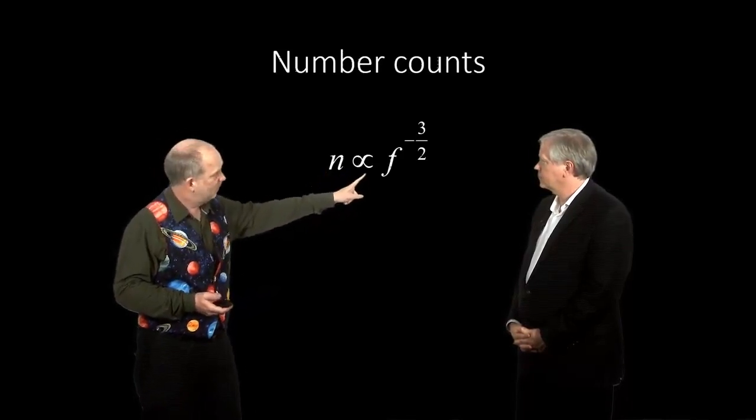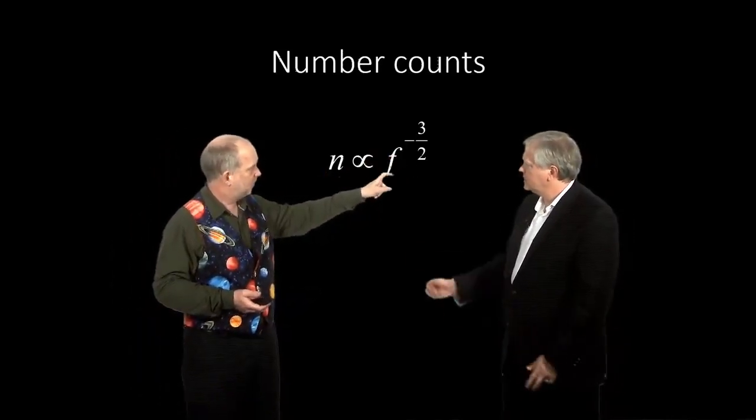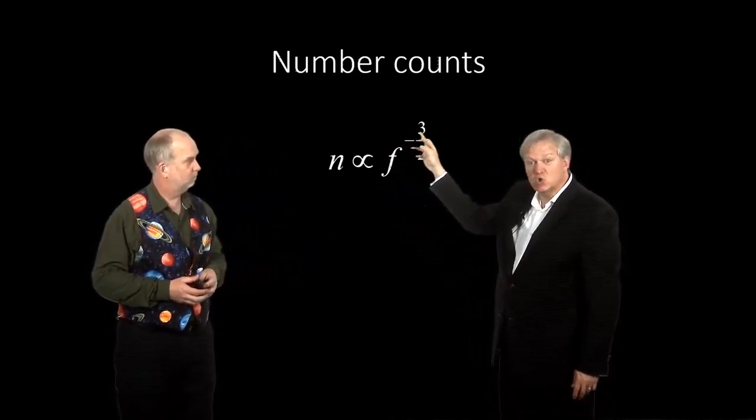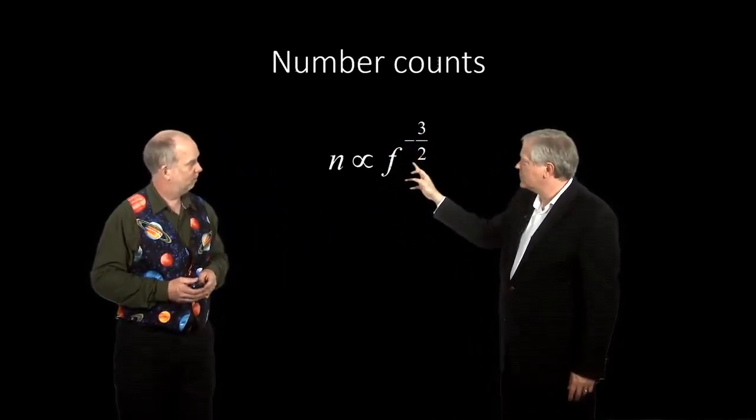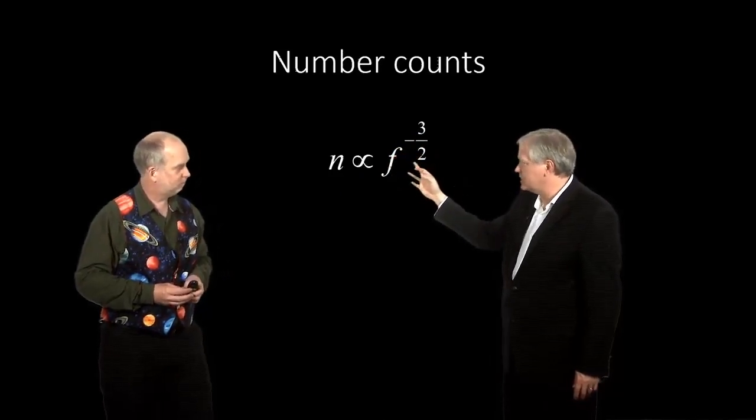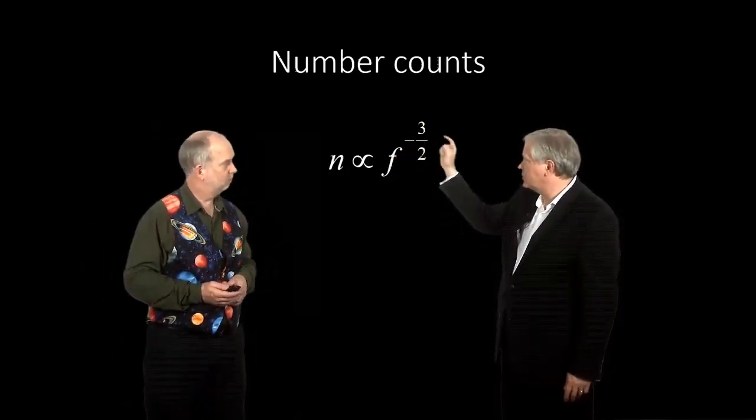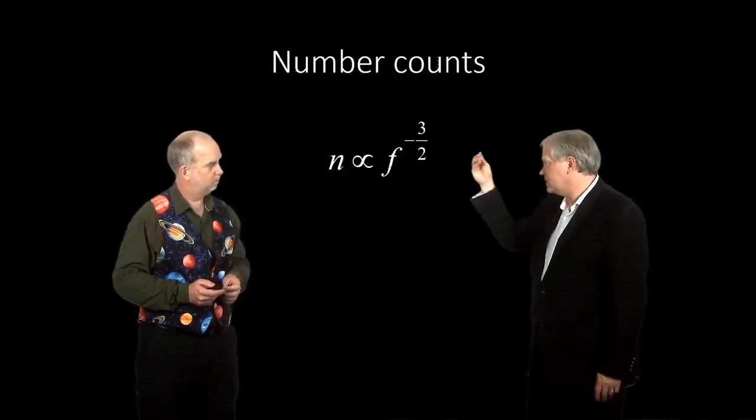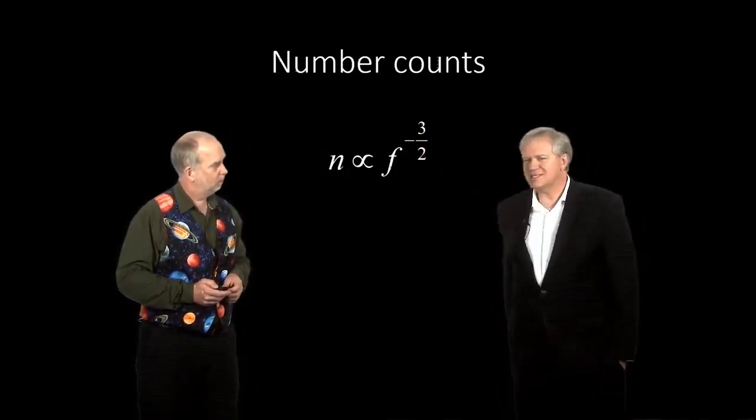should be proportional to the flux to the minus three halves power. And that's because the volume goes, the number goes as the cube of the distance, but the flux or the brightness goes down as the square. So you get the volume with the cubed the distance and the square is the diminution in flux, so that's how that comes out.